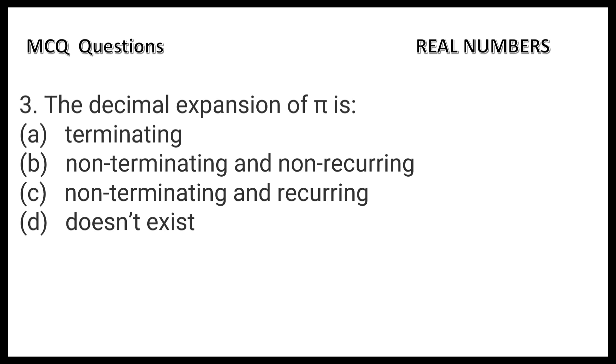The third question is: The decimal expansion of π is. We know that π = 22/7, which is terminating and recurring, but this is not the answer. The approximate value of π is 3.14, which is terminating,